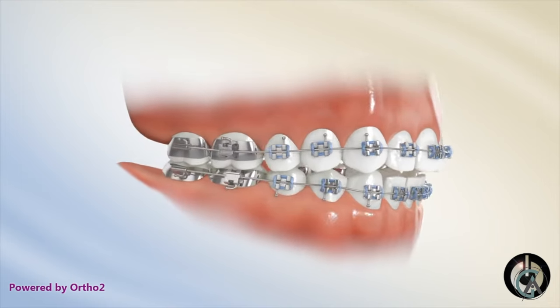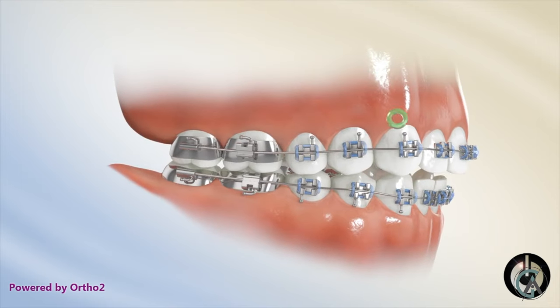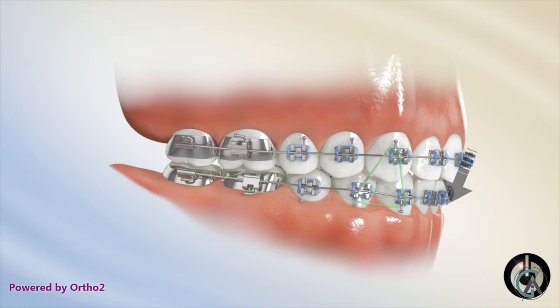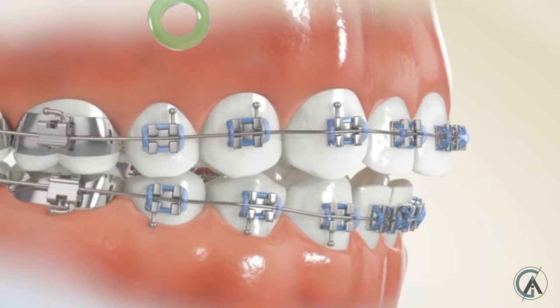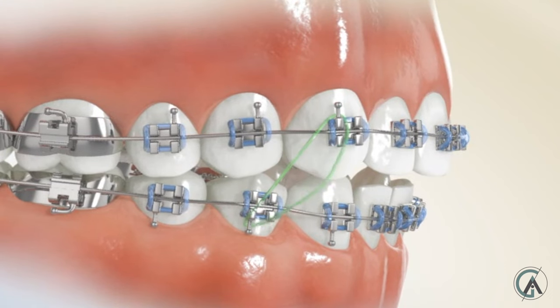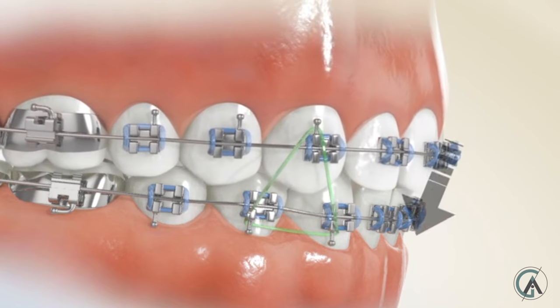The first elastic pattern is called Class 1 triangles, or triangle elastics. These are attached from your canine on the top to your canine and first premolar on the bottom. One of the main reasons is to bring your upper and lower teeth closer together to achieve an appropriate bite. This can also be used if you have a little bit of an anterior open bite where your front teeth don't touch when you bite down — these elastics pull the upper teeth down and the lower teeth up. They can also be used to maintain the bite in the back while closing space elsewhere.